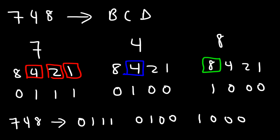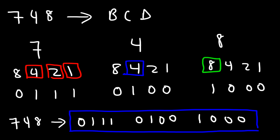And so that's it for the second example. As you can see, it's very easy to convert a decimal number into a binary coded decimal. Now, for the sake of practice, let's try one more example.